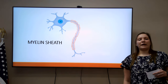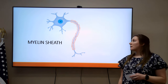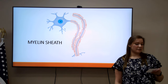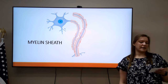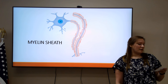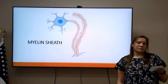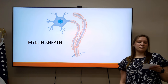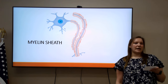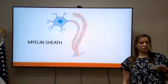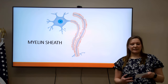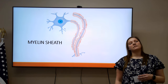The myelin sheath is what covers the axon. The Cleveland Clinic states that the myelin sheath allows electrical impulses to travel quickly and efficiently and maintains the strength of the impulse message as it travels down the axon.